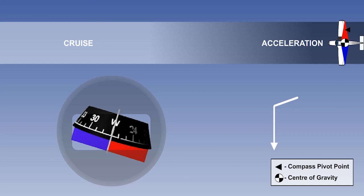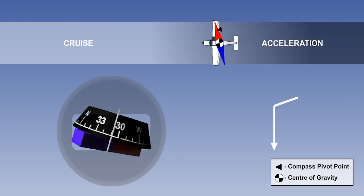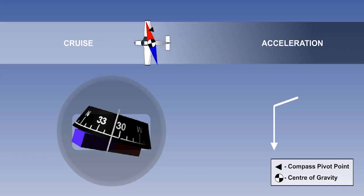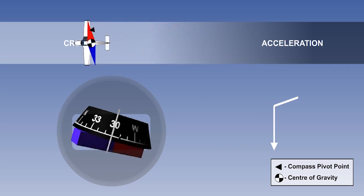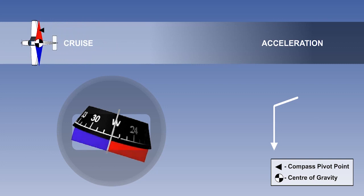It is worth noting that where magnetic dip occurs, regardless of which hemisphere we are in, an acceleration always results in an apparent turn towards the nearest magnetic pole. In deceleration, the opposite rules apply, and deceleration always results in an apparent turn towards the magnetic equator whenever magnetic dip occurs.